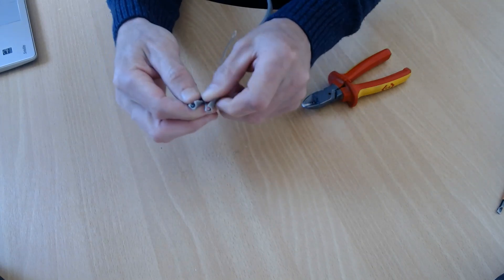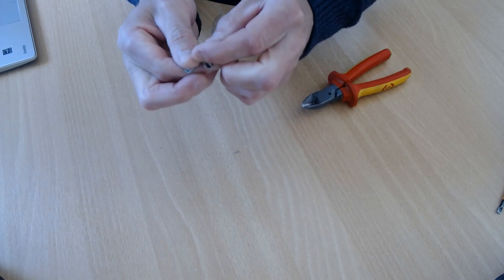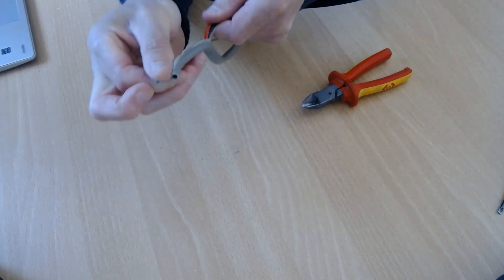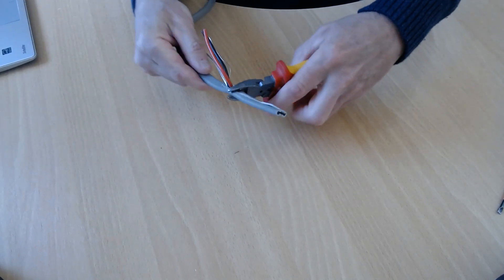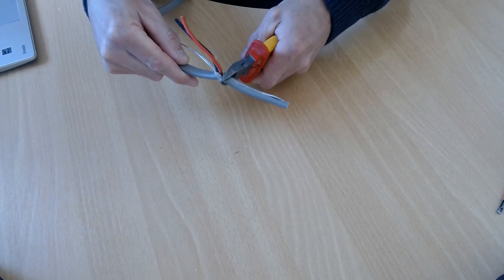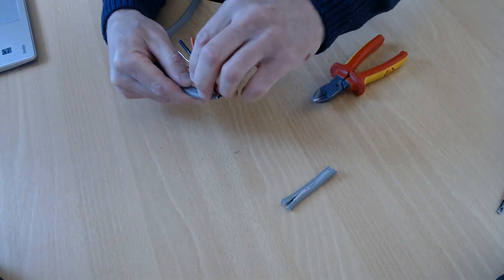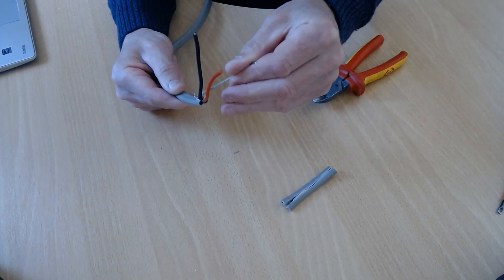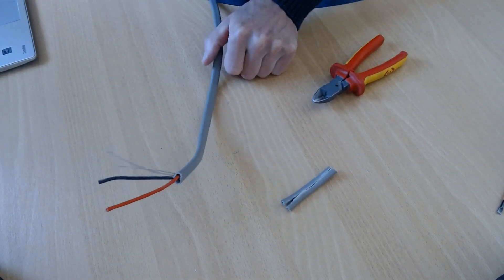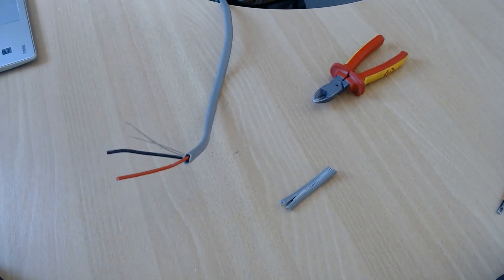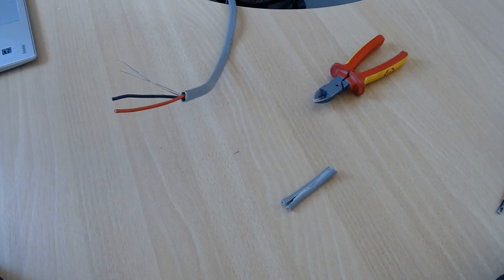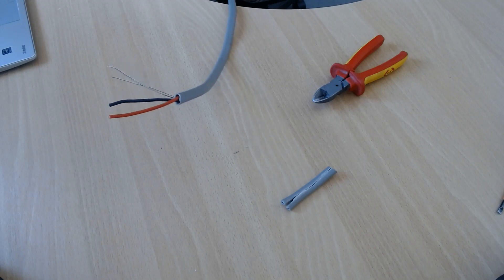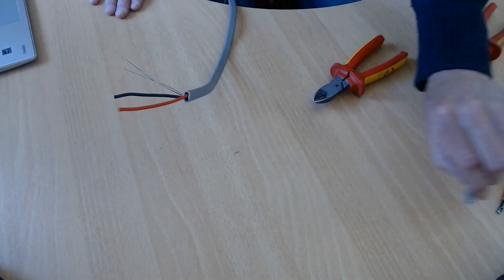Then you do that, unravel these like that, and then you've got all three cables. Then cut off the excess insulation and you've got all three.